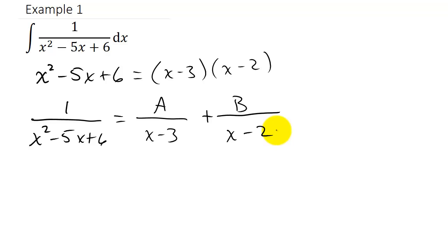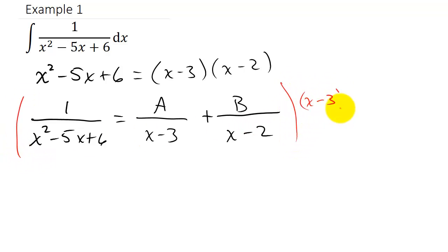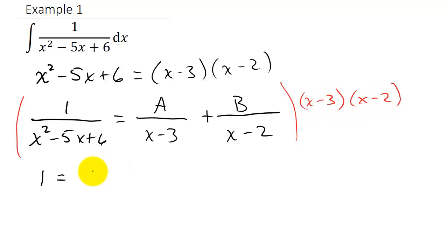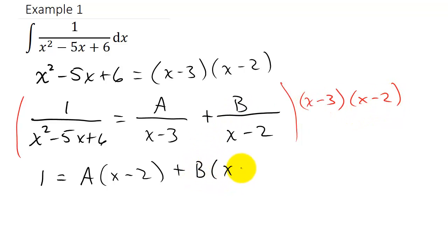Now I need to multiply each term by the common denominator, which is (x − 3)(x − 2). When I multiply this through, the denominator on the left cancels, and I'm left with 1 equals A times (x − 2) — because the (x − 3) cancels on that term — plus B times (x − 3), because the (x − 2) cancels on that term.